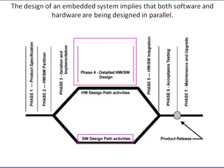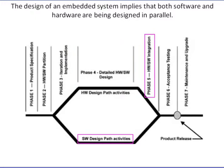Software design begins once the memory map is defined and the hardware registers are documented. Work begins to develop many different kinds of software, including bootstrap code to start up the CPU and initialize the system hardware, diagnostics, real-time operating system, device drivers, and application software. During this phase, tools for compilation and debugging are selected and coding is done.